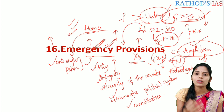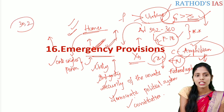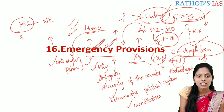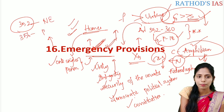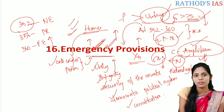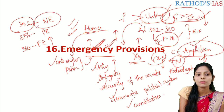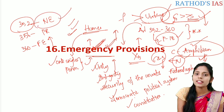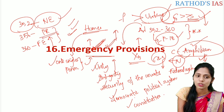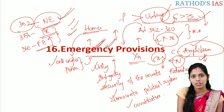Our constitution mainly talks about three types of emergencies. Article 352 talks about the national emergency. Article 356 talks about the president's rule. And article 360 talks about the financial emergency. For our convenience, we are going to discuss the national emergency in this lecture, and in the next part we will see the president's rule and financial emergency.